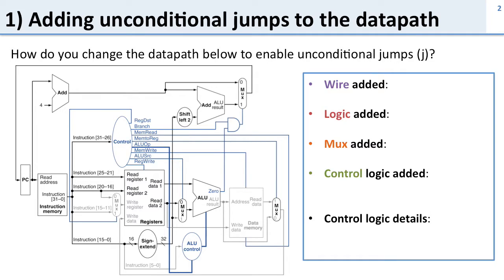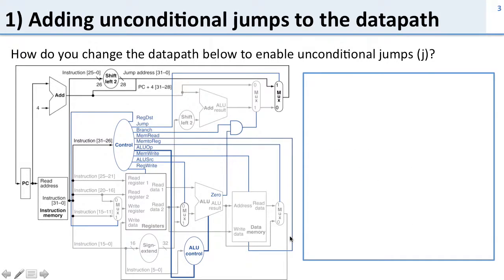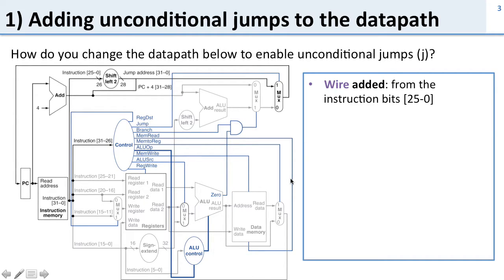To do this we're going to need to make some changes. We need to add some wires, some logic, some muxes, and controls. Let's take a look at the solution. Here's the solution — it's a picture from the book. You can see we've got a shifter and some extra wires and extra logic. Let's walk through what they are.